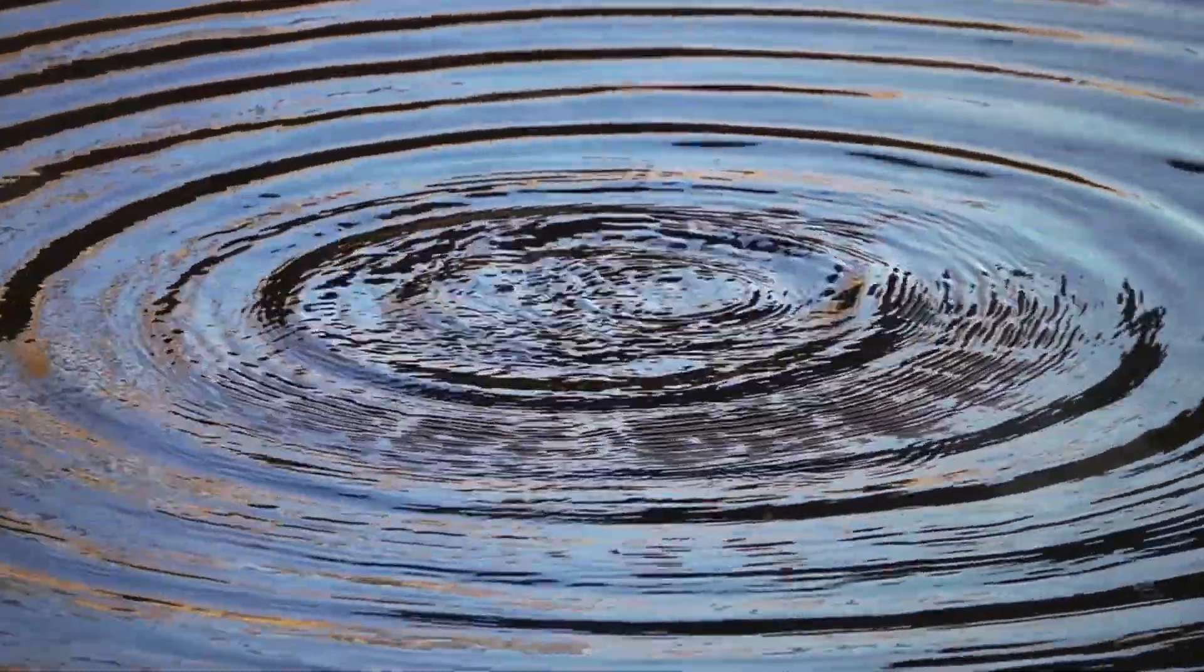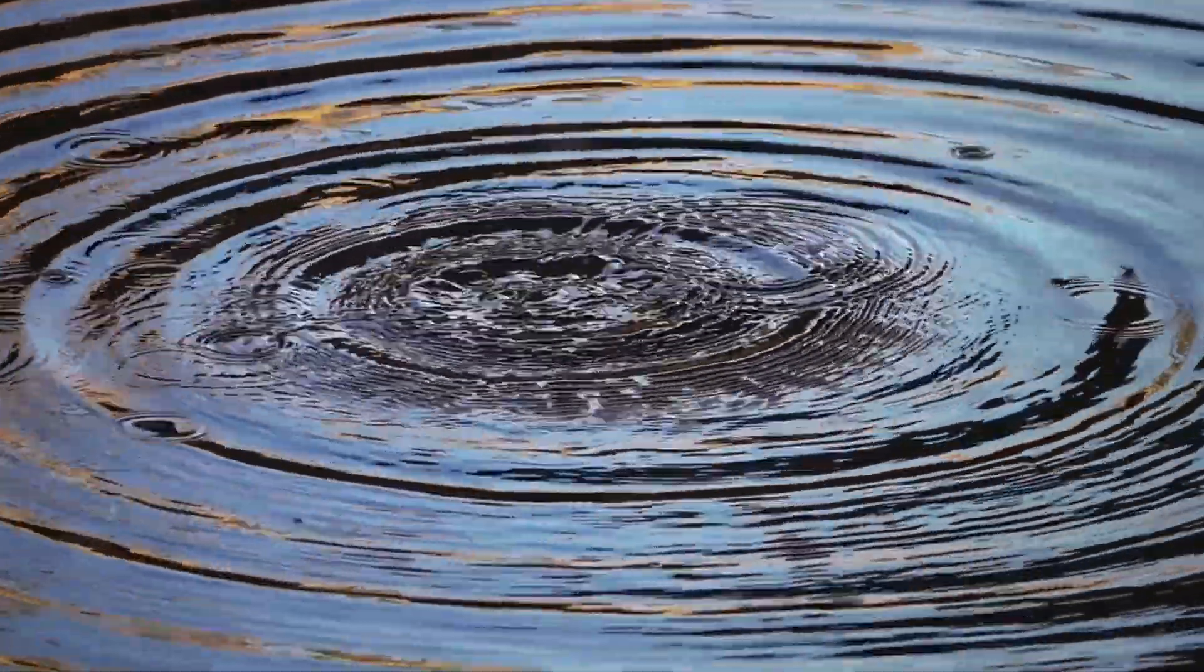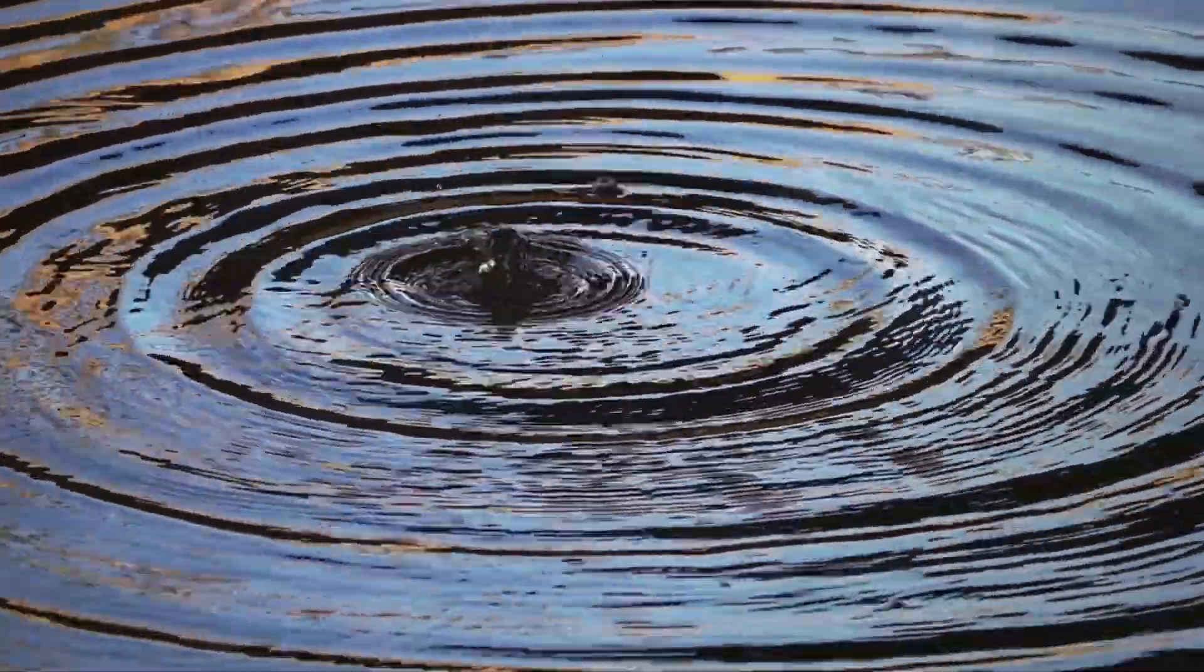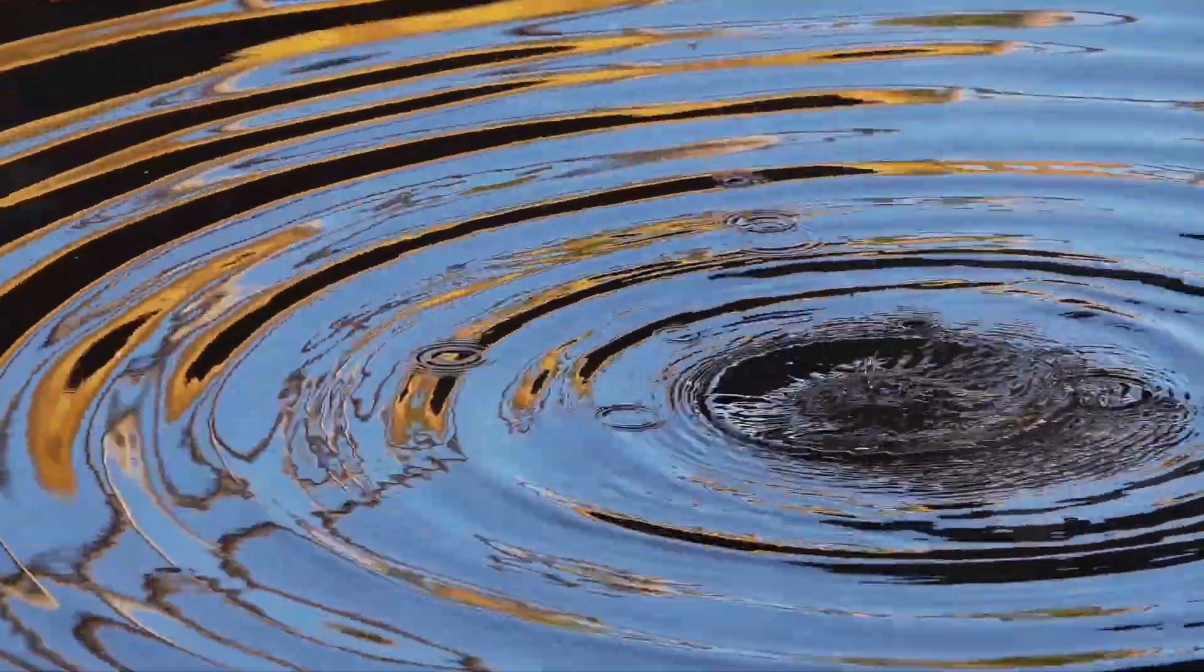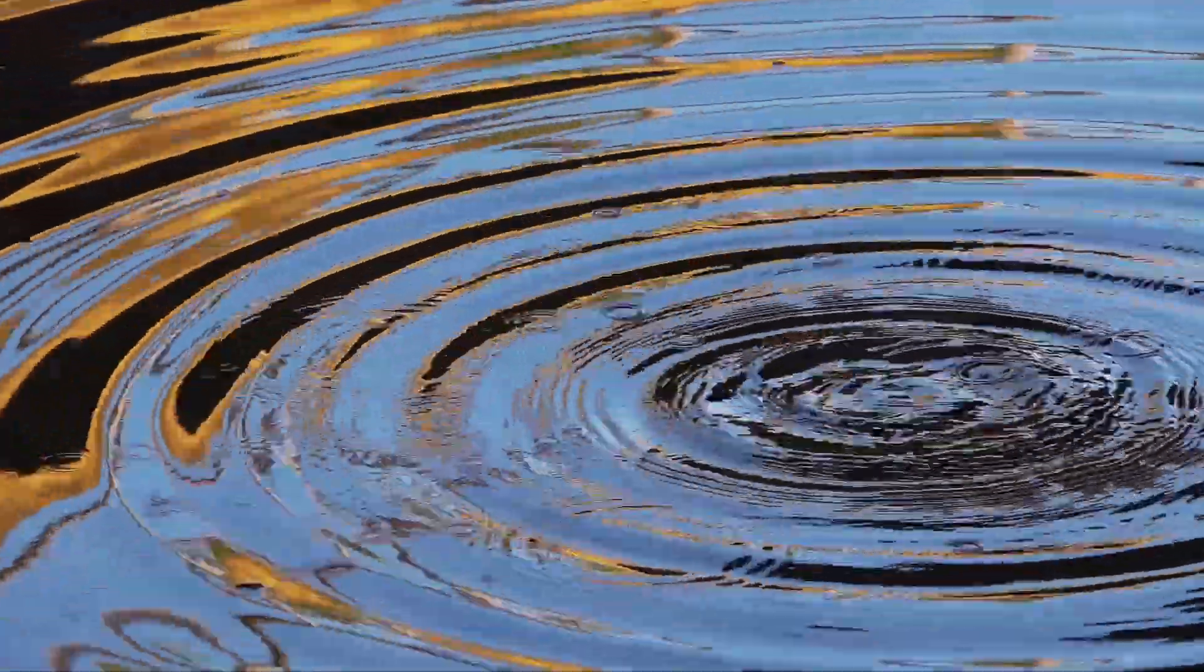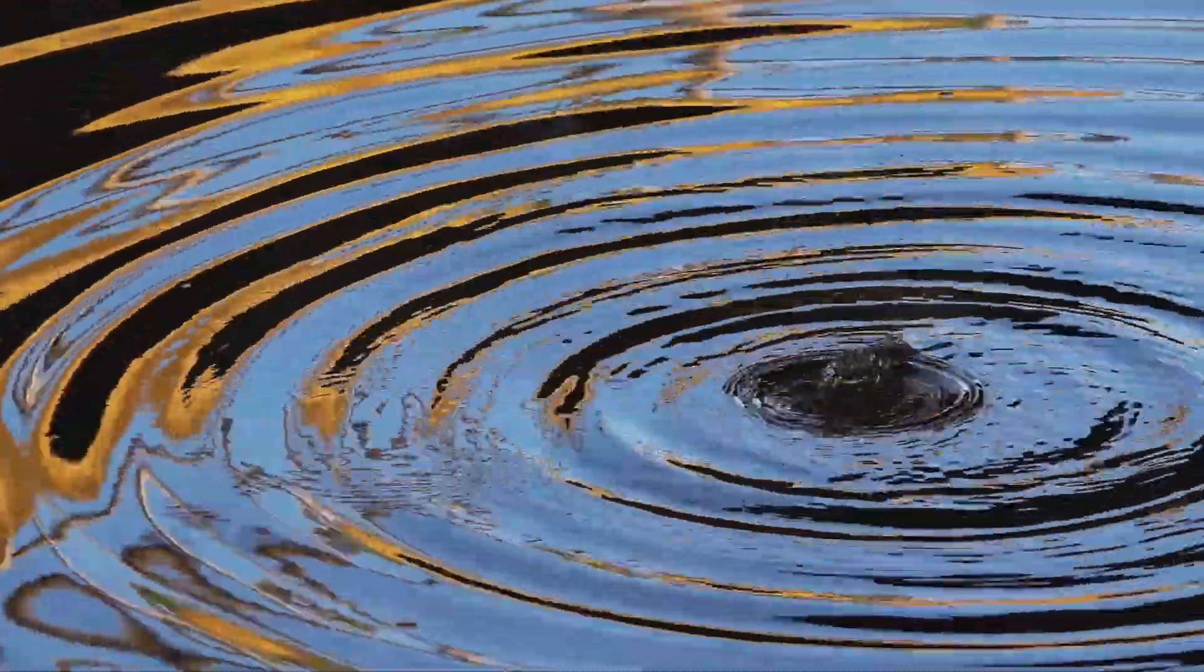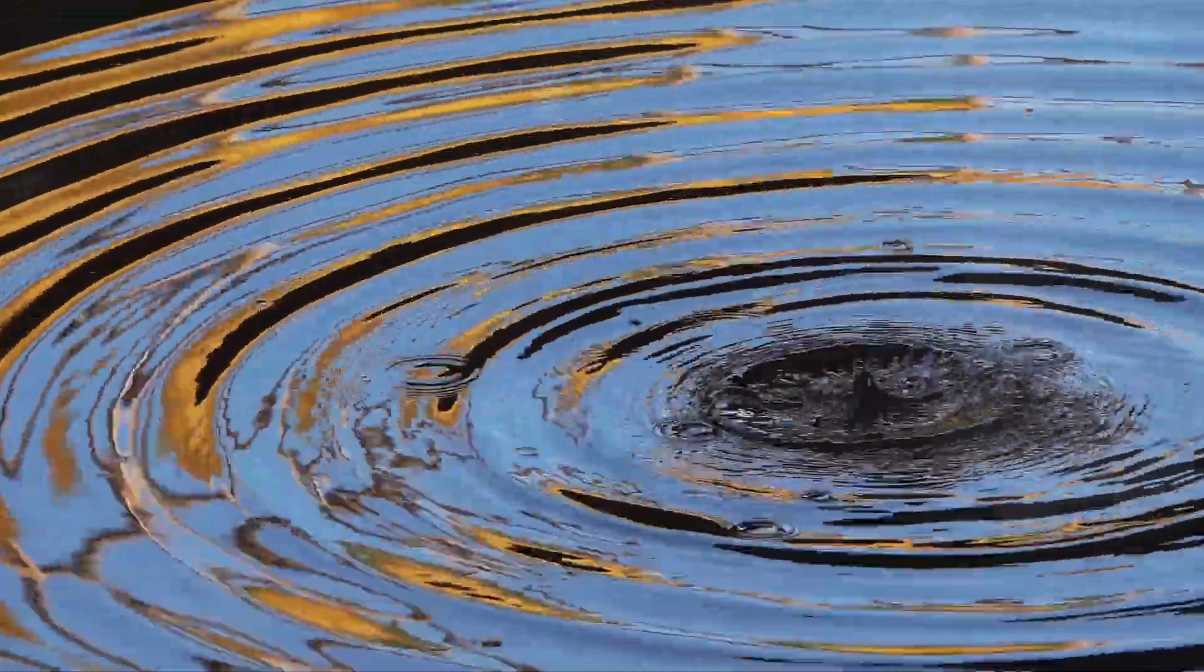Ripples, right? These ripples spread out in concentric circles, each one growing larger and fainter as it moves away from the point of impact. They spread out from the point of impact, disturbing the once smooth surface.